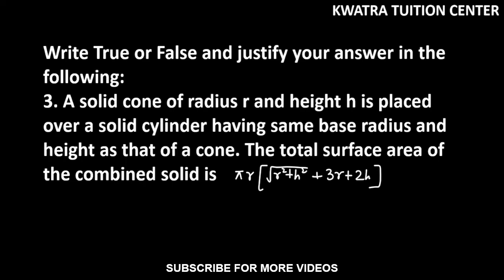Let's now start with question number 3 which says a solid cone of radius r and height h is placed over a solid cylinder having same base radius and height as that of a cone. We have a cylinder and a cone.